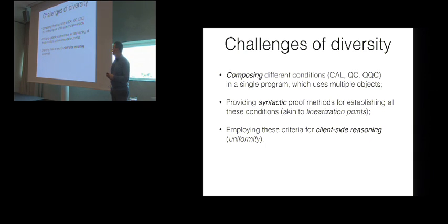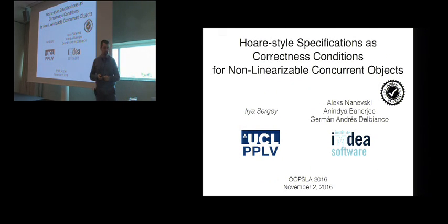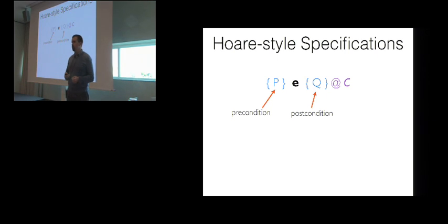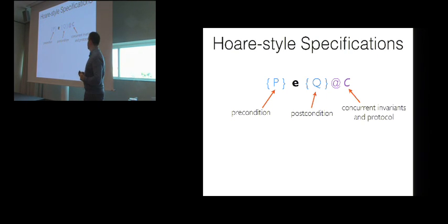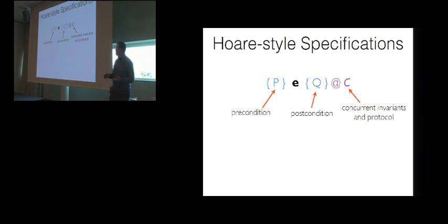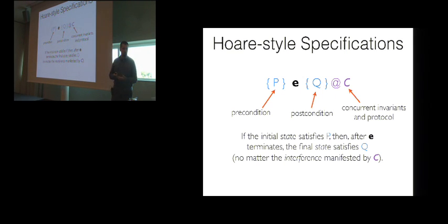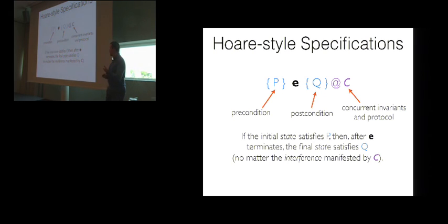This work was essentially an attempt to address these three shortcomings by using a single tool which we understand quite well. The key part is about Hoare-style specifications, which most of you are probably familiar with. We have a program specified by means of some pre- and post-conditions. In the case of concurrency, this Hoare tuple also comes with an additional component — you can think of it as additional context assumptions specifying what invariants of the data structures the program manipulates should hold in the multi-threaded context. There is still the standard partial correctness meaning: if the program starts in a state satisfying P and terminates, then the final state satisfies Q, and this is all resilient to interference manifested by the concurrent context C.